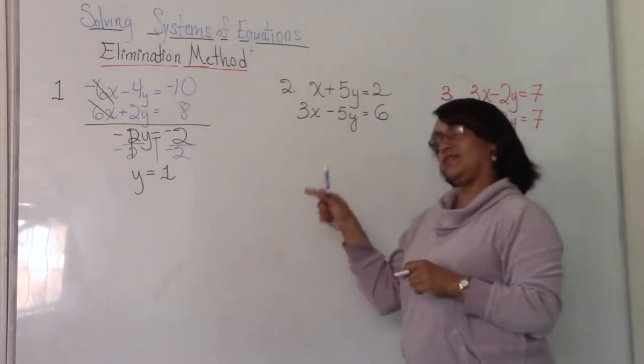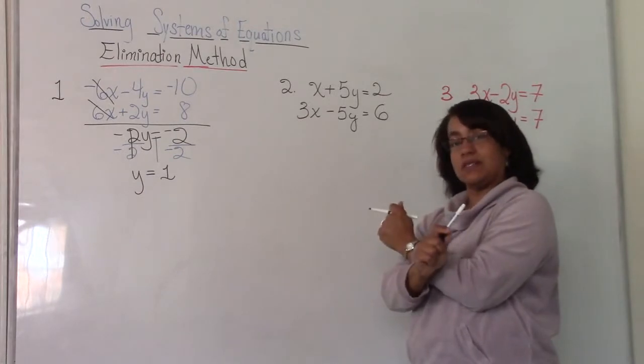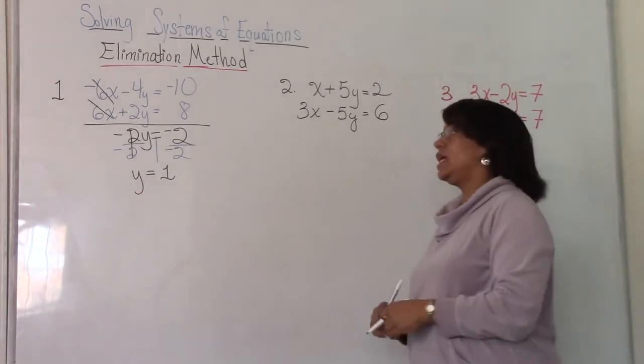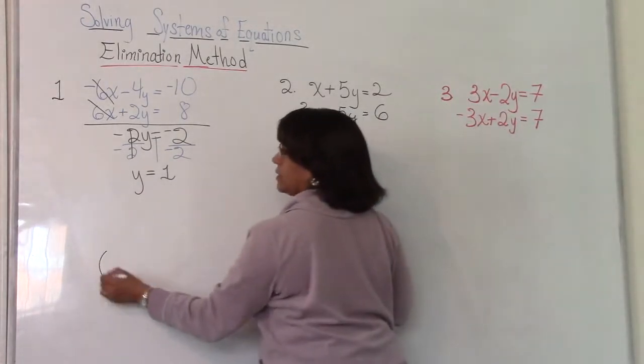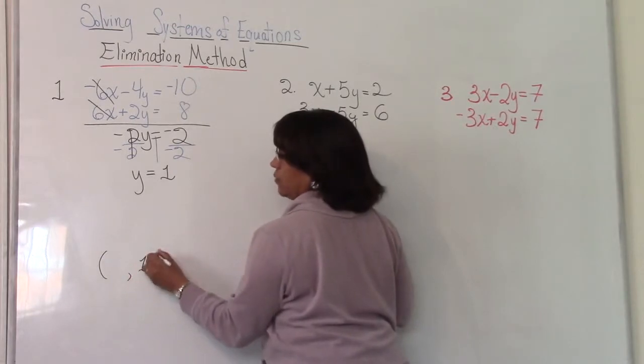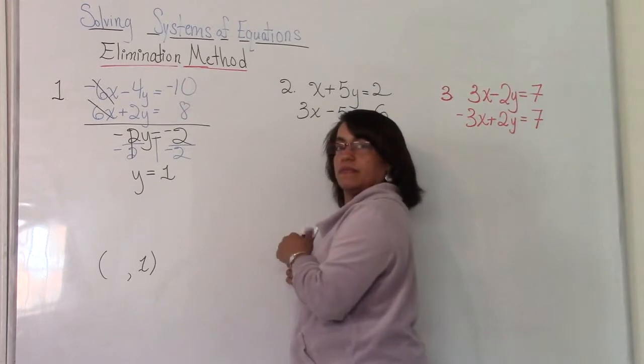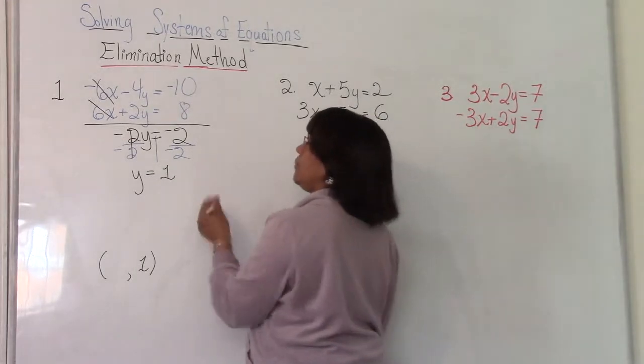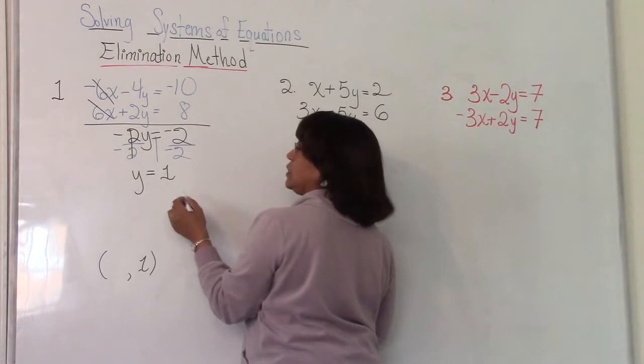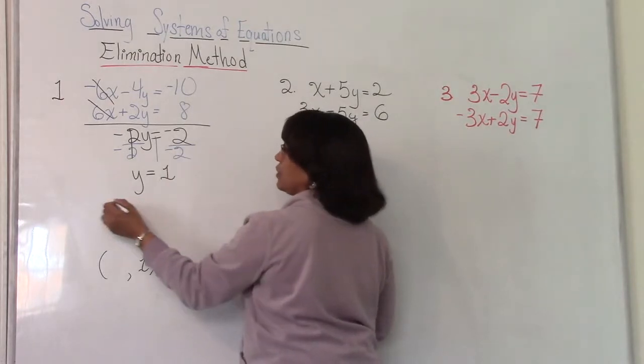Are we finished? No, because we have two lines and the solution is where the two lines cross, if there is a solution. And so we need an ordered pair to represent that. So we just found the y coordinate of our ordered pair. How do we find the x coordinate? Good. You take your 1, plug it into one of your equations. It doesn't even matter which one. It's totally up to you. We'll use the first one.